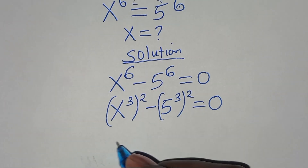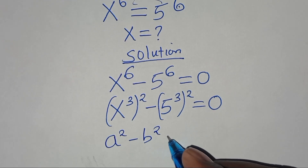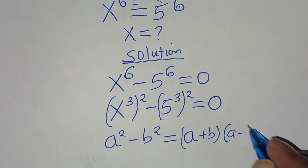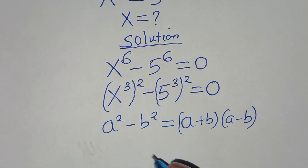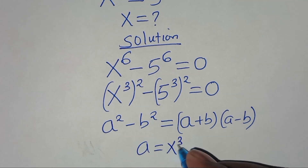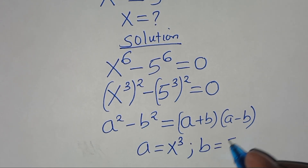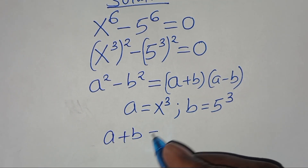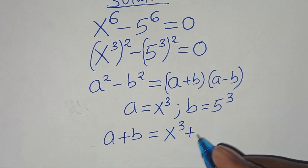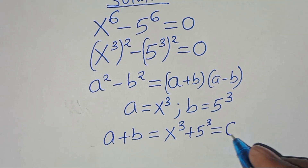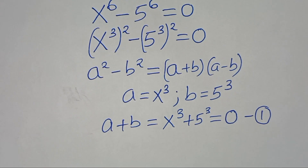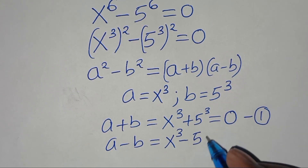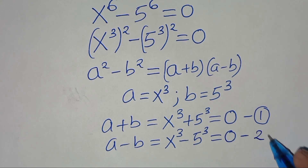So this is actually in the form of a squared minus b squared, which you can express as a plus b, times a minus b. From this equation, a is equal to x to power 3, and b is equal to 5 to power 3. So this implies that a plus b is the same thing as x to power 3 plus 5 to power 3, this is equal to 0 — let's call this equation 1. And a minus b is the same thing as x to power 3 subtract 5 to power 3, this is equal to 0 — let's call this equation 2.